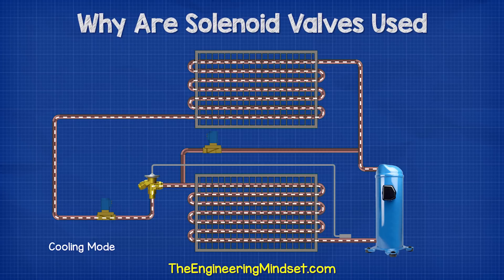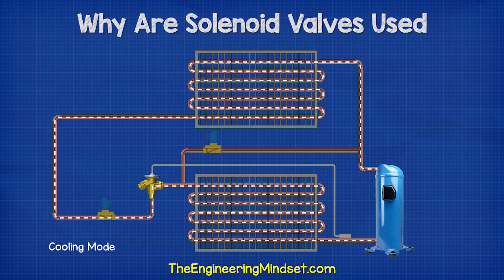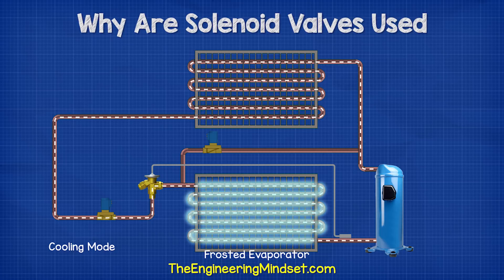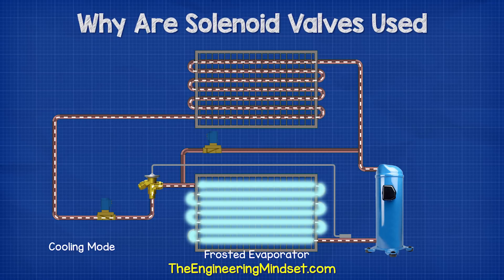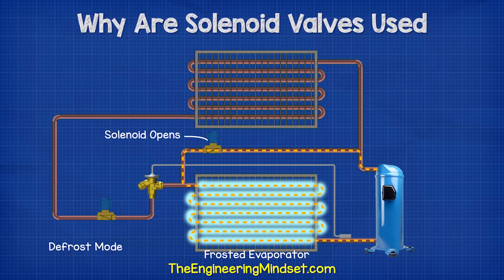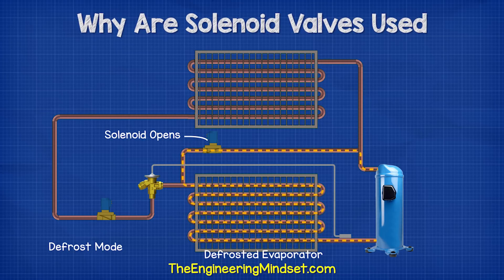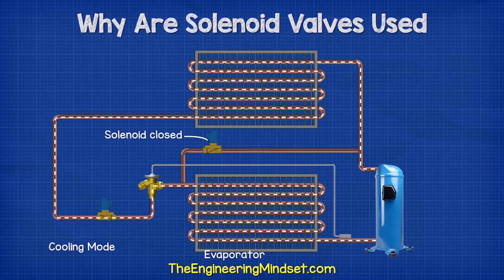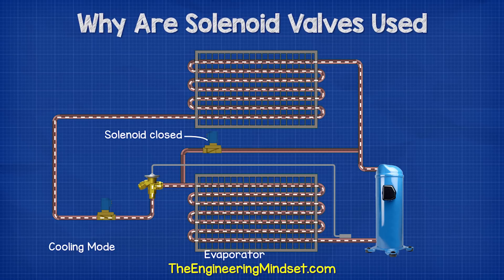Another very common application for solenoid valves in refrigeration systems is in the hot gas defrost line to control the flow of hot refrigerant into the evaporator during the defrost cycle. When the moisture in the air condenses on the tubes of the evaporator, it will freeze and cause a buildup of ice. We need to remove this to ensure efficient operation, so we open the solenoid valve to send hot refrigerant from the compressor through the evaporator instead of the condenser. Then, once the defrost has completed, the solenoid valve shuts and the system continues as normal in cooling mode.